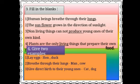Now the fourth question: give two examples. First one: lay eggs — hen and duck. Second one: breathe through their lungs — man, cow, and other animals. Third one: give direct birth to their young ones — cat and dog.